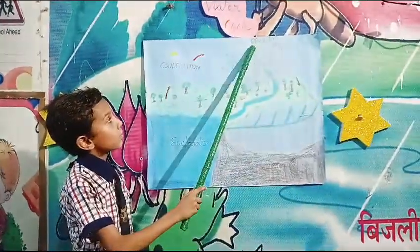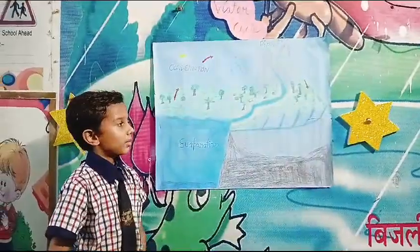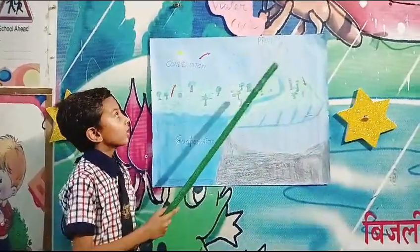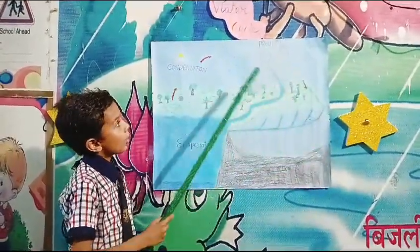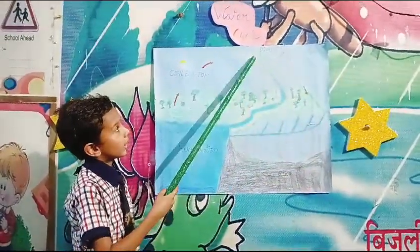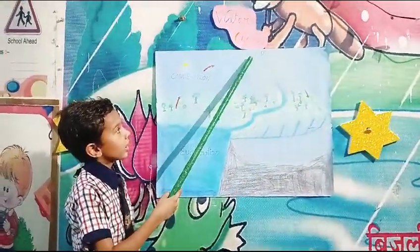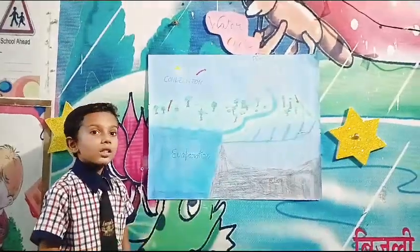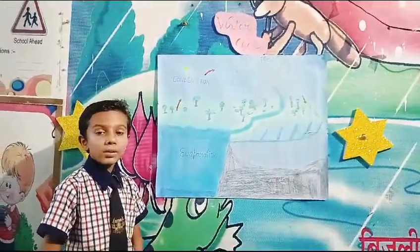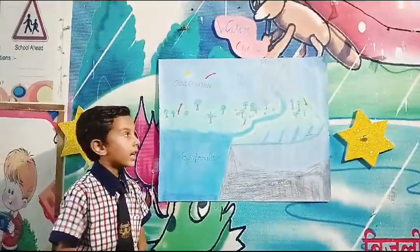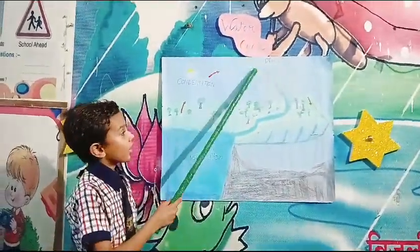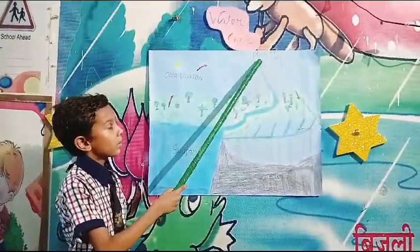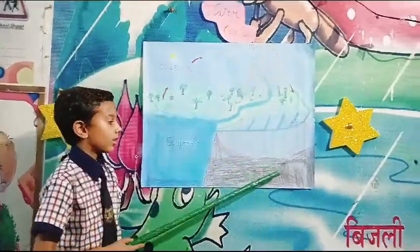The third stage is precipitation. The tiny droplets keep collecting in clouds, and as the water becomes heavy, it falls as rain. This is called precipitation.